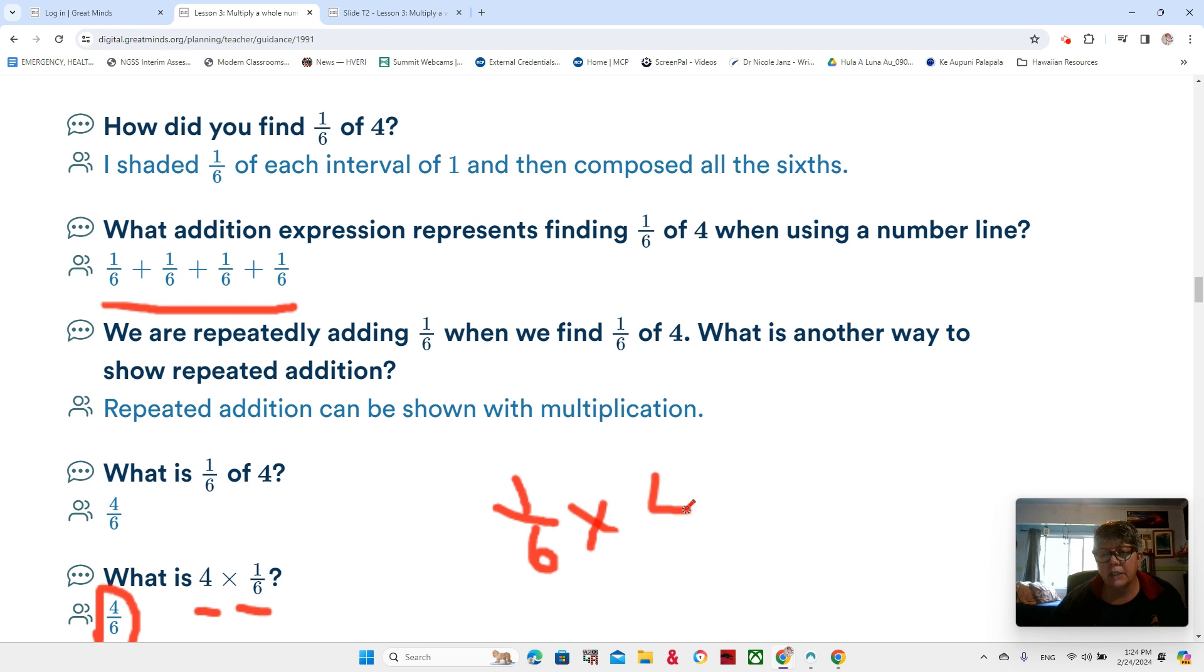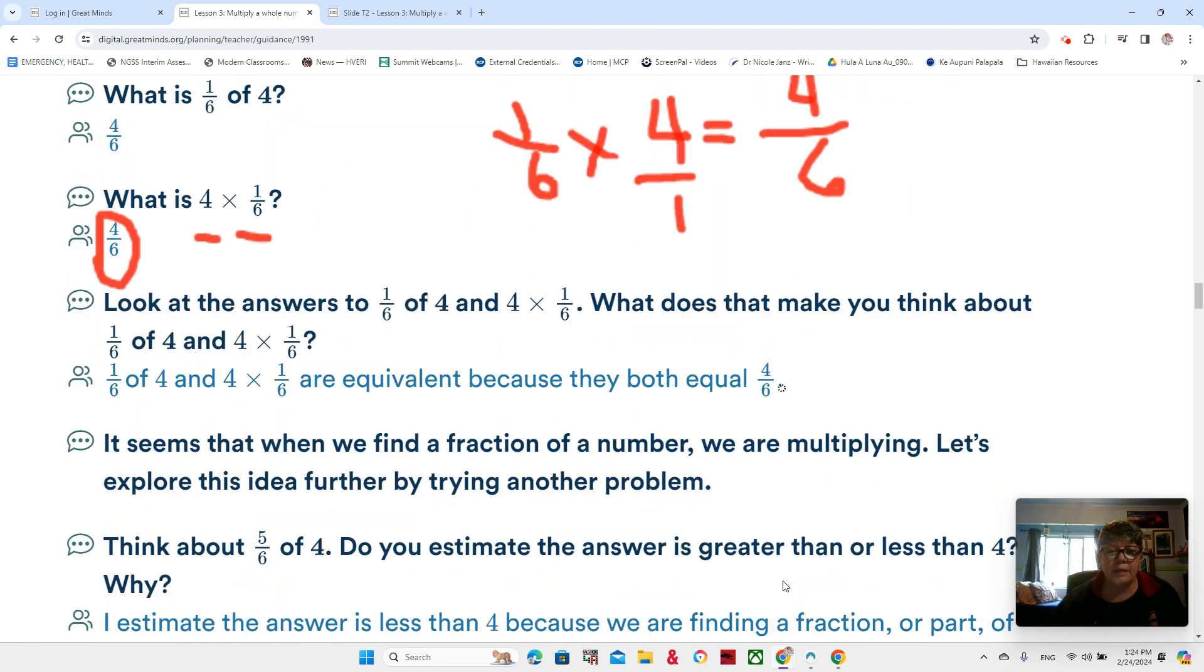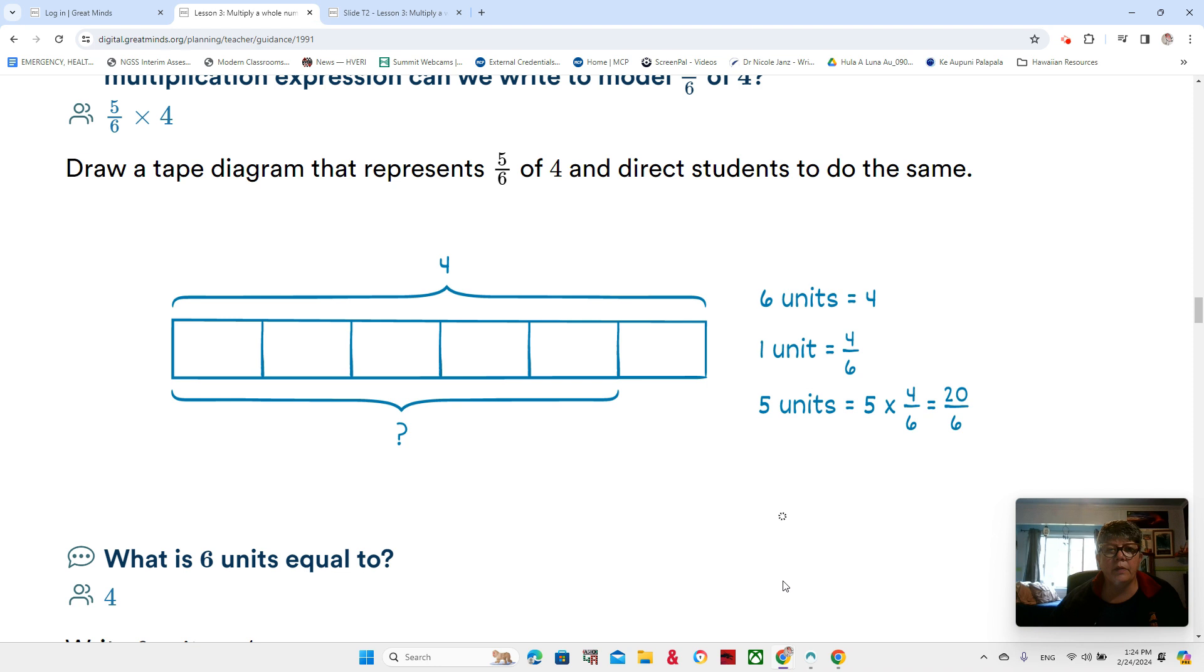One-sixth times four, because we want four of those, and that would be four-sixths. Remember this is a whole number, so if we wrote it as a fraction it would have a one on the bottom. So we are still multiplying straight across like we have been.